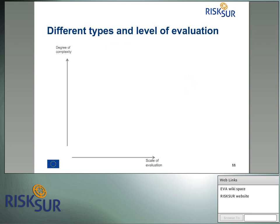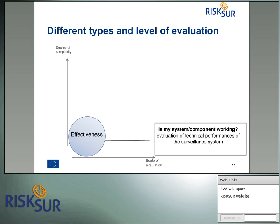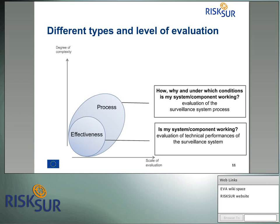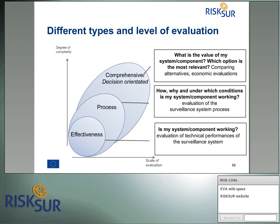There are different types and levels of evaluation. One can do an effectiveness evaluation to understand if the system is working and evaluate specific technical performance. Then there is process evaluation to understand why the system is working in a particular way and identify corrective actions. The highest level is comprehensive evaluation — understanding the value of the system and comparing it against a counterfactual, including economic evaluation. As the type of evaluation increases in scope, so does the degree of complexity and the resources and time needed.